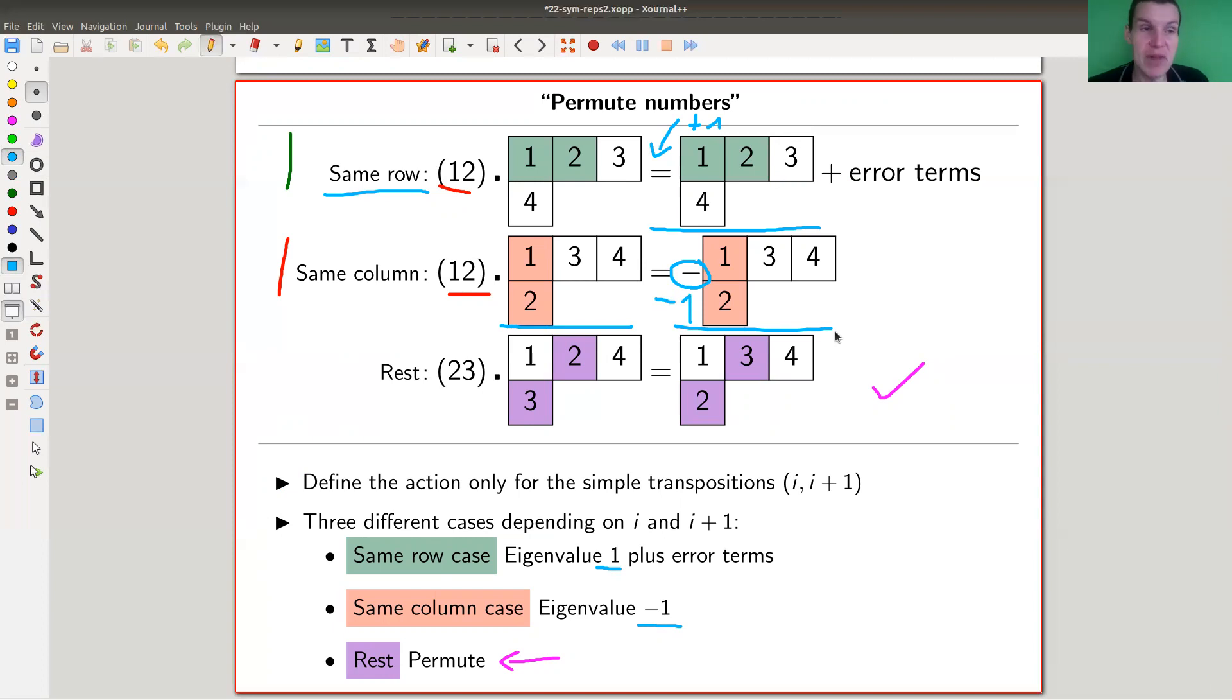Just the answer is, if you can't permute, just don't do it—just put the same tableau. It's a fixed vector with eigenvalue either one or minus one. That's not a bad answer. If you permute, you permute. If you can't permute, you have an eigenvector of either eigenvalue one or minus one, depending on whether it's a row or a column problem.